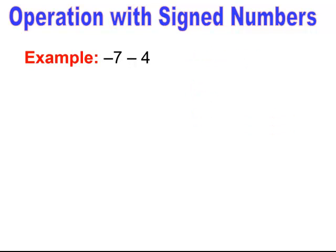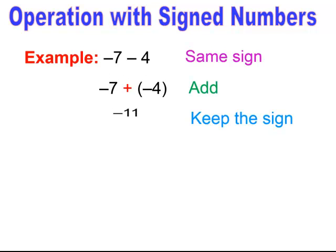This next one is where you have the same sign and it's negative. It's negative seven minus four. Minus and negative mean the same thing, so in this case they're the same sign. That means I have to add the two numbers together — seven and four — and keep the negative sign. You want to know this rule: if it's the same sign, you add and keep the sign, and we end up with negative eleven.